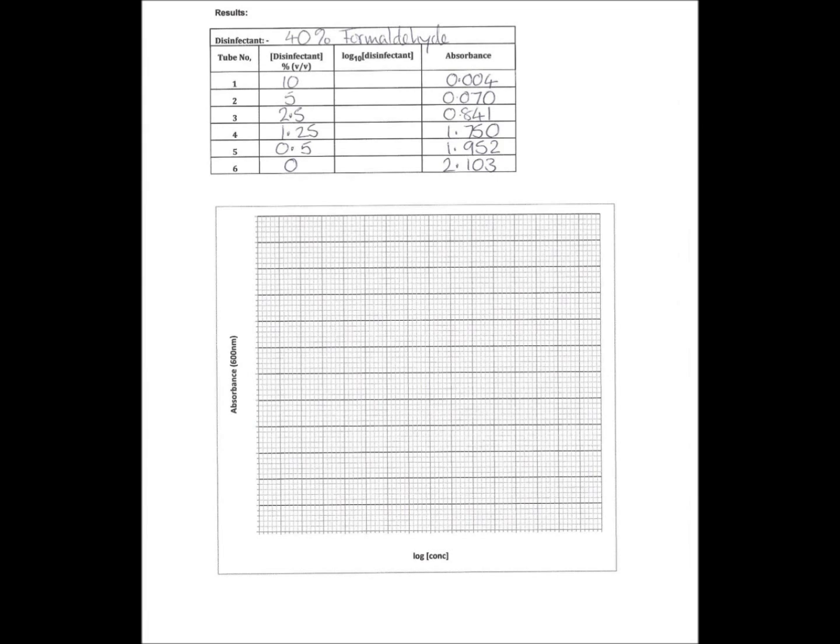So what I have here is the data from my 40% formaldehyde experiment. I've got the concentrations here in percentage disinfectant, which I've just copied across from the table where I worked these out. Then I've got my absorbance readings here, but you'll see that there's an empty column labeled log 10 disinfectant, and I need these values.